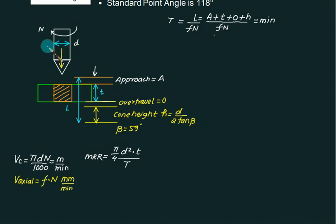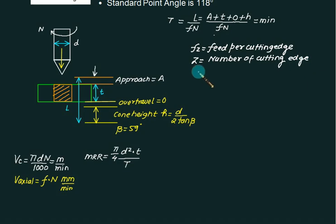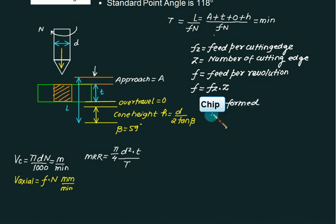For fast drilling, we use multi-point tools with multiple cutting edges instead of one. We write f_z, where f_z is feed per cutting edge and z equals the number of cutting edges. This formula is also used for milling. The feed per revolution f = f_z × z. If you have two cutting edges, multiply by two. The chip thickness is given by feed divided by 2 sin(β/2), where β is 59 degrees.